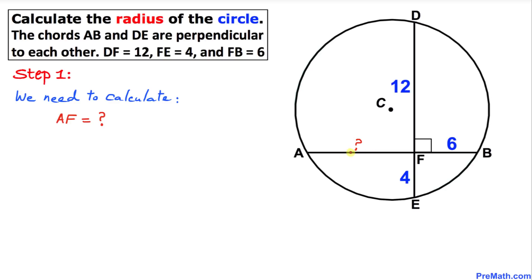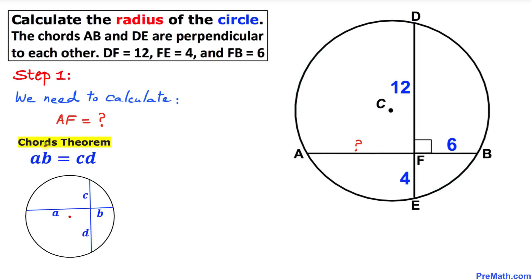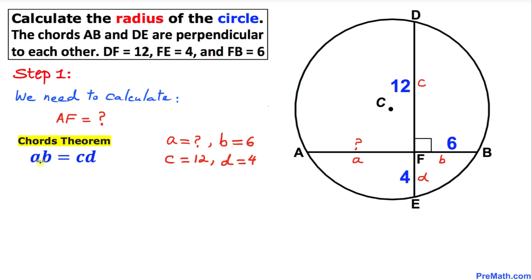Let's recall the intersecting chords theorem. When two chords intersect each other, A times B equals C times D. Let's apply this to our figure: A is unknown, B is 6, C is 12, and D is 4. So we get: A times 6 equals 12 times 4, which gives us 6A equals 48.